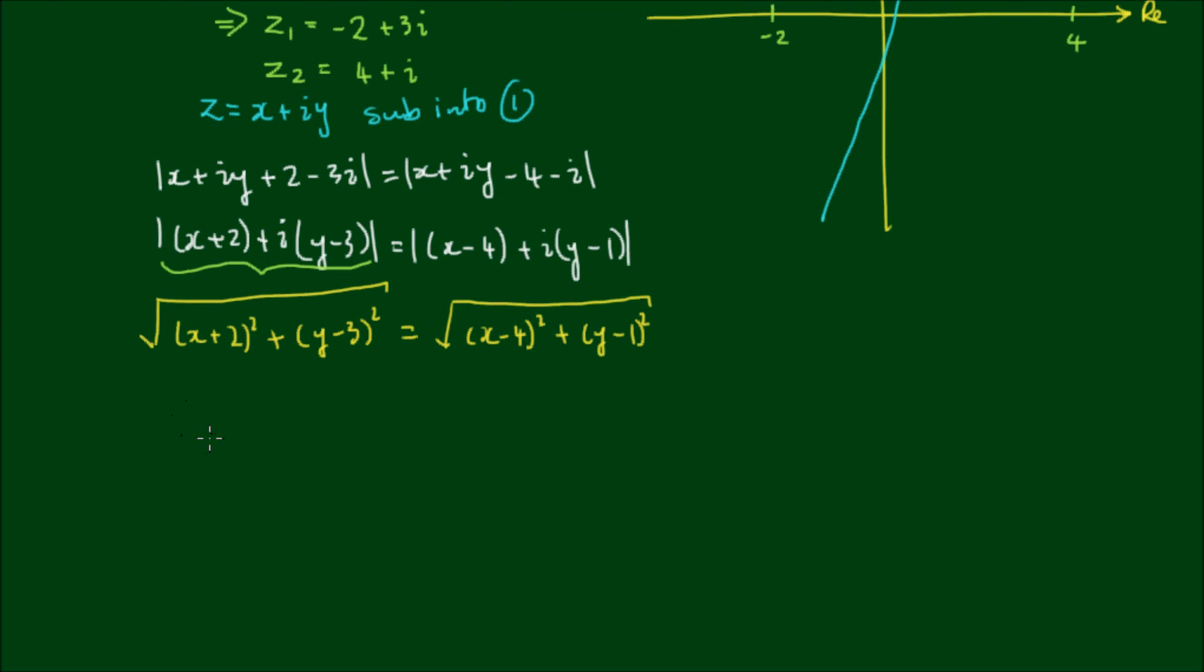So now if I take the square root of both sides, I get (x + 2)² + (y - 3)² = (x - 4)² + (y - 1)². And now the next bit is a bit tedious because I'll have to perform binomial expansion of each of these terms.